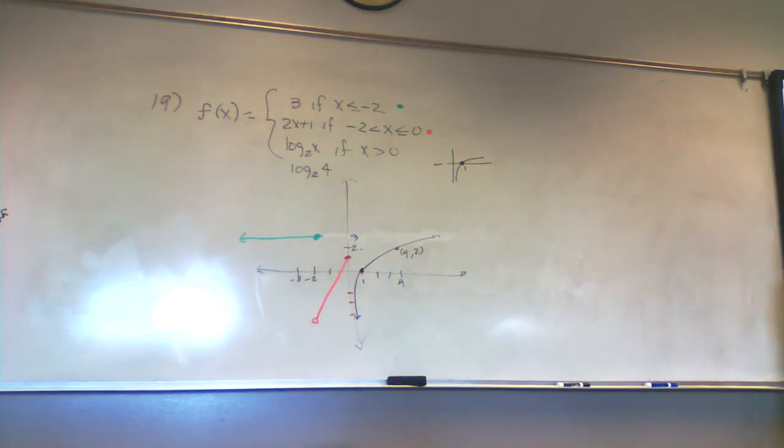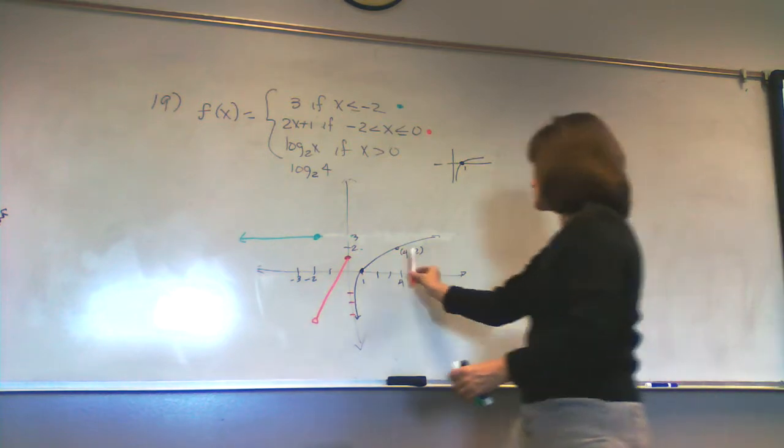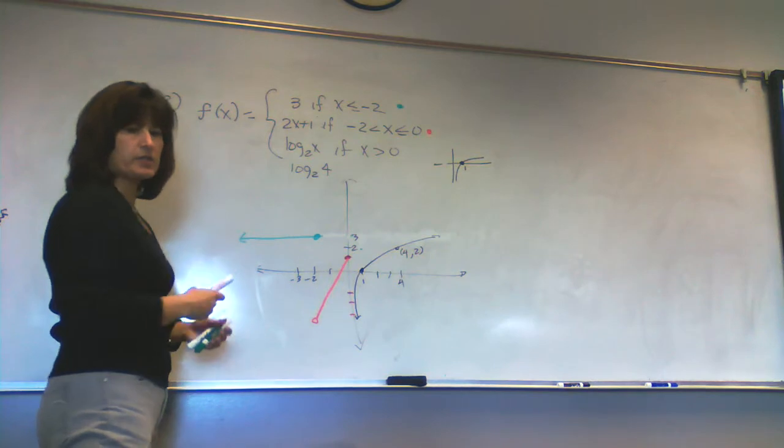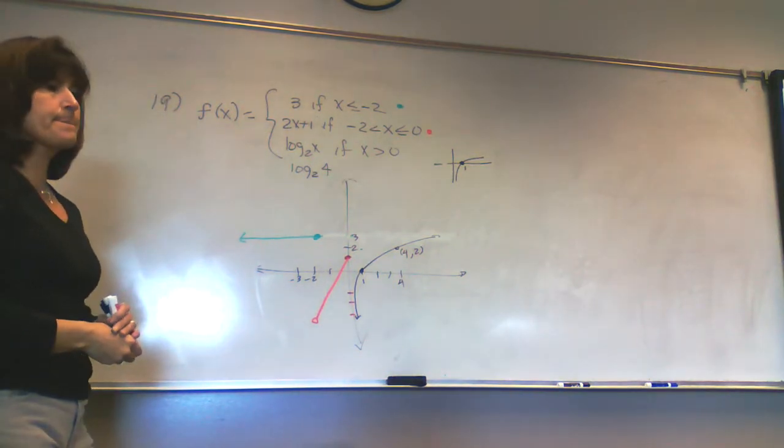So, that's why I always suggest when you're done, step back and go, wait. Is that really a function? Does it satisfy the vertical line test? And it does. Anywhere I draw a vertical line, it doesn't go through two points. That way it's a function.